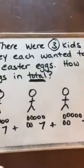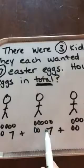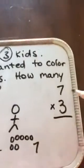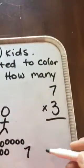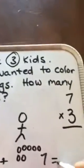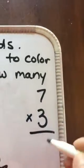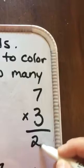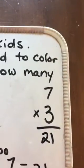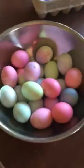Now I could add seven plus seven plus seven, and if I count these up I would know that it equals 21. And if I look at my multiplication chart, I would also know that seven times three equals 21. So for real life, I knew that I needed 21 eggs to color for Easter.